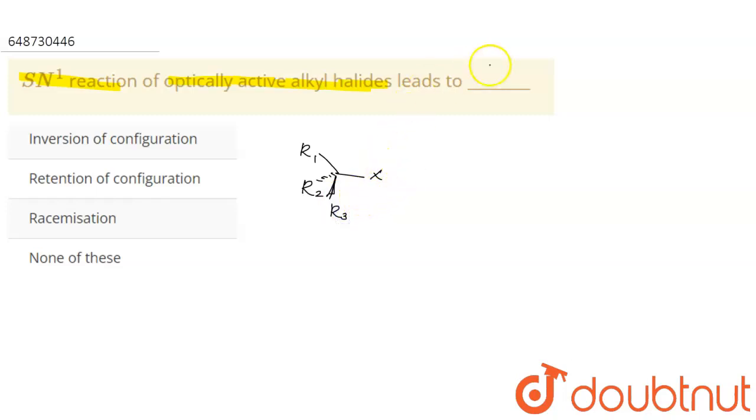So we are going to react this with methanol. So what will happen? The OMe will get substituted in the place of X. What is the first step in SN1 reaction?